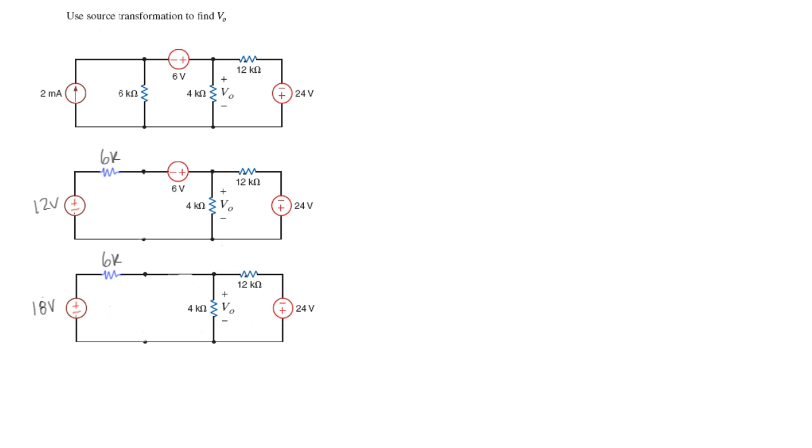So I'll just do a quick redraw on that. Okay, and another new circuit here. And you can see that I changed the 18 volt voltage source into a current source simply by dividing the voltage by the resistance.